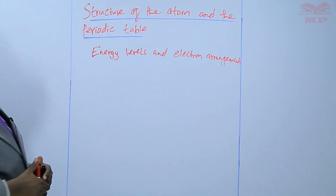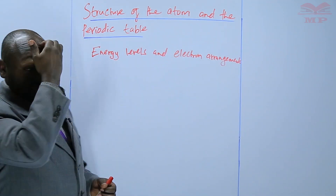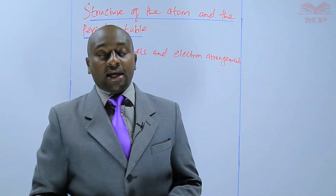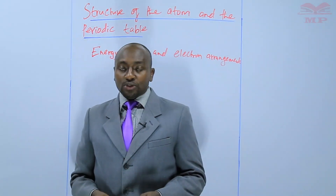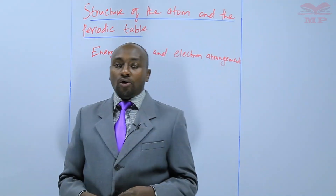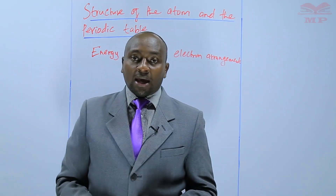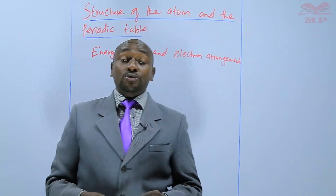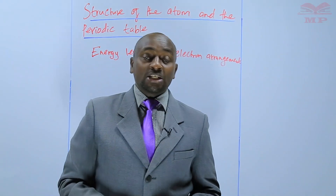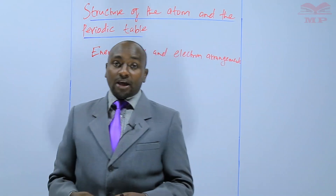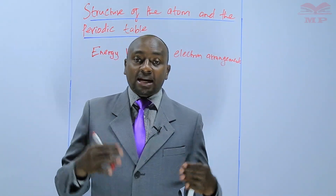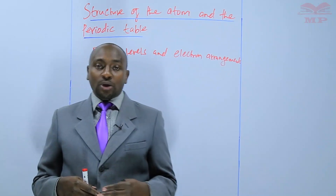We earlier learnt that electrons are found in regions outside the nucleus called energy levels. Those electrons are arranged in a particular way — they are not just scattered within the energy levels, but they are arranged in a particular manner.